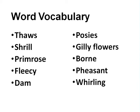First of all, I have selected some words from the poem 'The Months.' I will read these words with their correct pronunciation to increase your vocabulary. The words are: thaws, shrill, primrose, fleecy, dam, posies, gilly flowers, pheasant, and whirling.